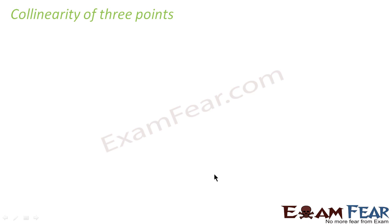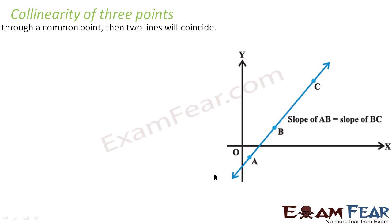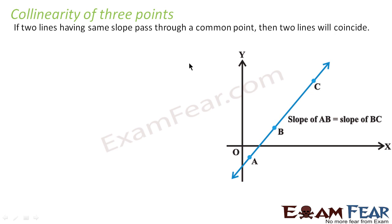Now we'll discuss a new topic called collinearity of 3 points. So it is said that if we have two lines which have the same slope and they pass through a common point, that means we are talking about one line only — that is, the two lines will coincide.